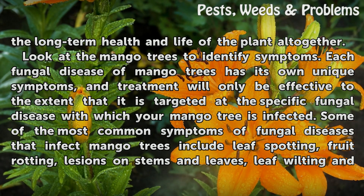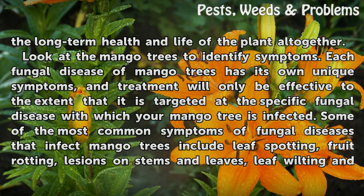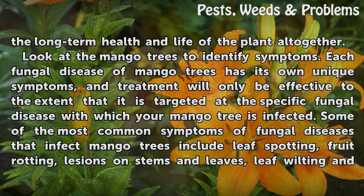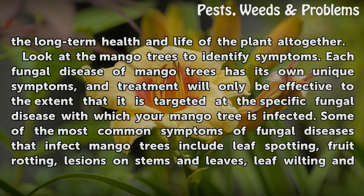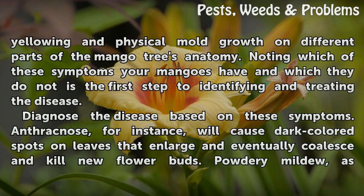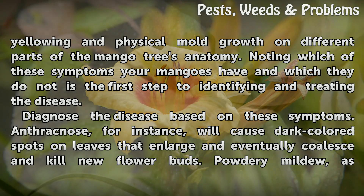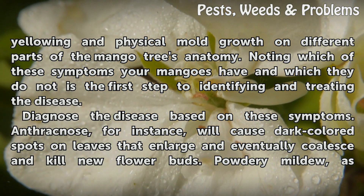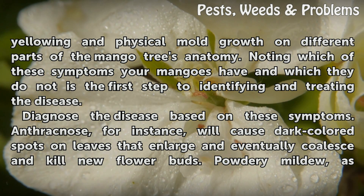Look at the mango trees to identify symptoms. Each fungal disease of mango trees has its own unique symptoms, and treatment will only be effective to the extent that it is targeted at the specific fungal disease with which your mango tree is infected. Some of the most common symptoms include leaf spotting, fruit rotting, lesions on stems and leaves, leaf wilting and yellowing, and physical mold growth on different parts of the mango tree's anatomy. Noting which of these symptoms your mangoes have is the first step to identifying and treating the disease.